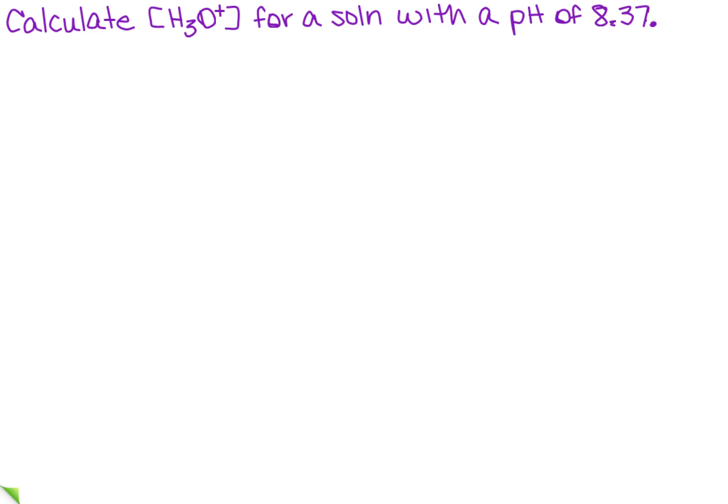I want to calculate the hydronium concentration for a solution with a pH of 8.37. We're going to use the same formula we've been using for pH: pH equals the negative log of the hydronium concentration.